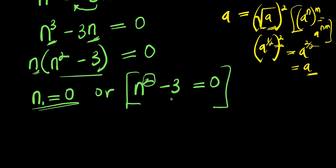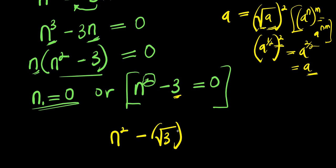We are going to do the same thing here. Instead of writing this 3, we have minus 3, and we are going to replace it with root of 3 to the power of 2. So what we have is n² minus the square root of 3 raised to the power of 2, and this equals zero.